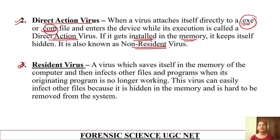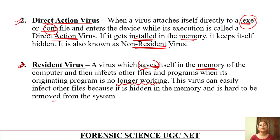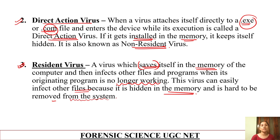Next is resident virus. A virus which saves itself in the memory of the computer is called a resident virus — it is hidden in memory. It then infects other files and programs even when the original operating program is no longer running. This virus can easily infect other files because it is hidden in the memory, and it is very hard to remove from the system.